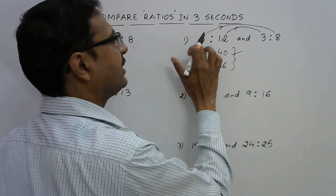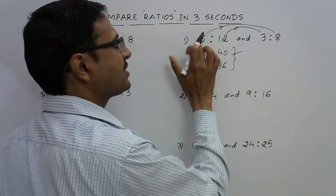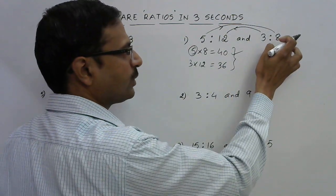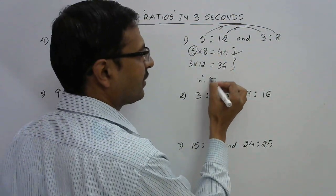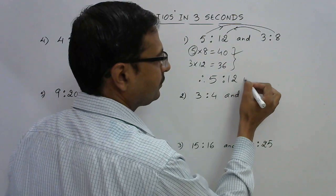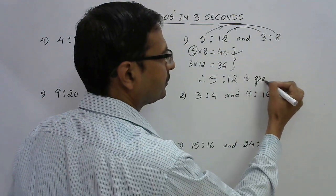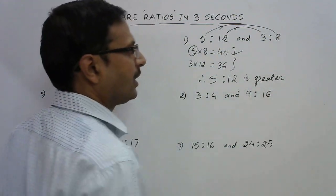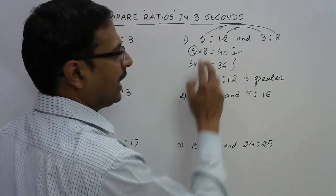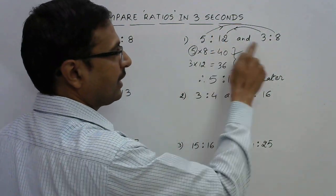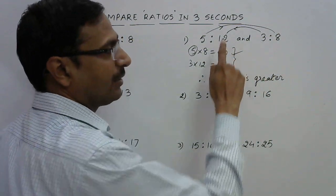This 40 is obtained by multiplying the first term of the first ratio with the second term of the second ratio. So 5 ratio 12 is greater. Suppose you would have got the second one as the greater, like 3 into 12 would have been a greater product, then 3 ratio 8 would have been greater.